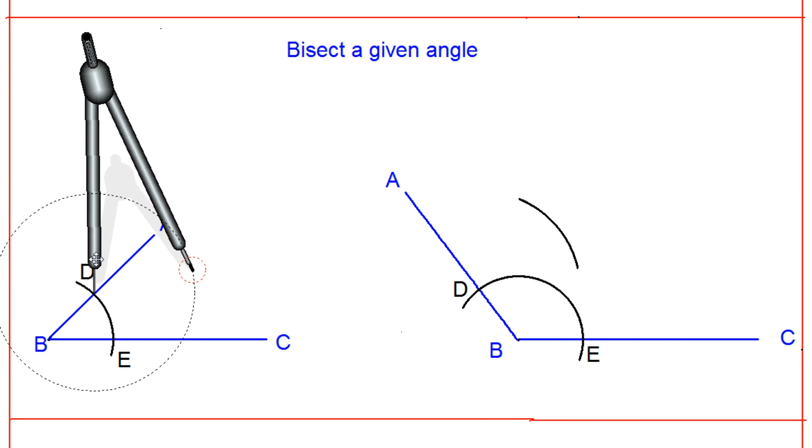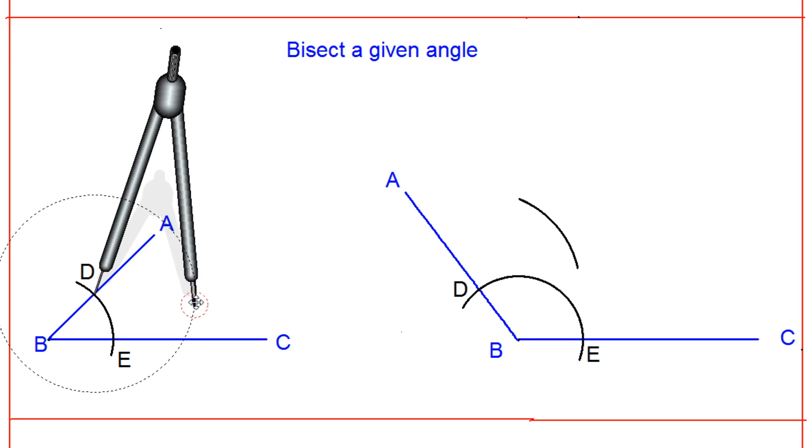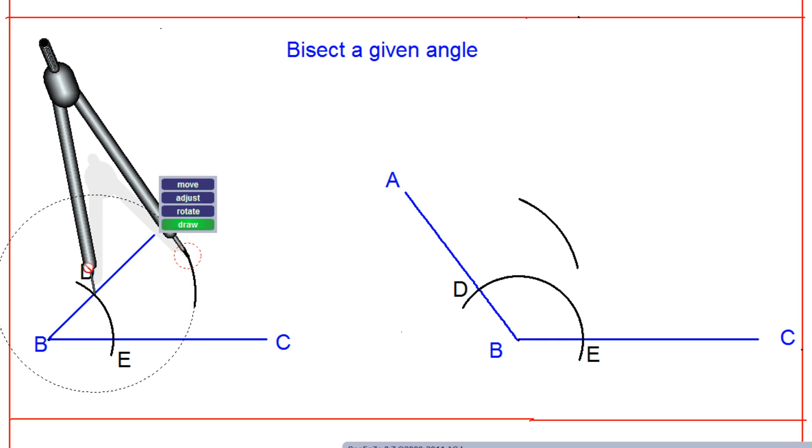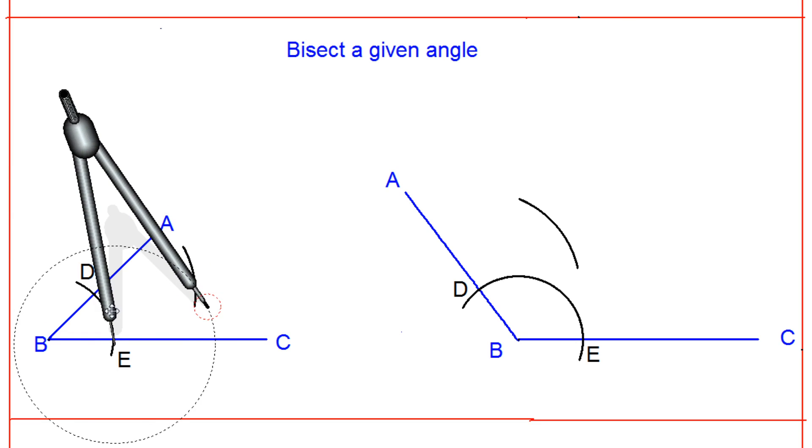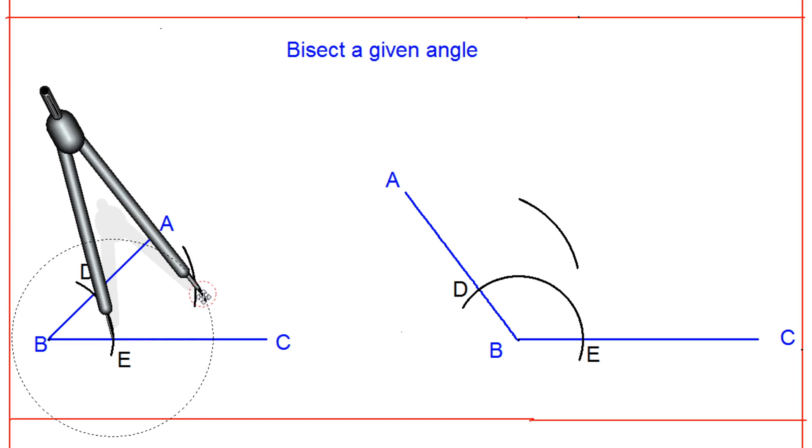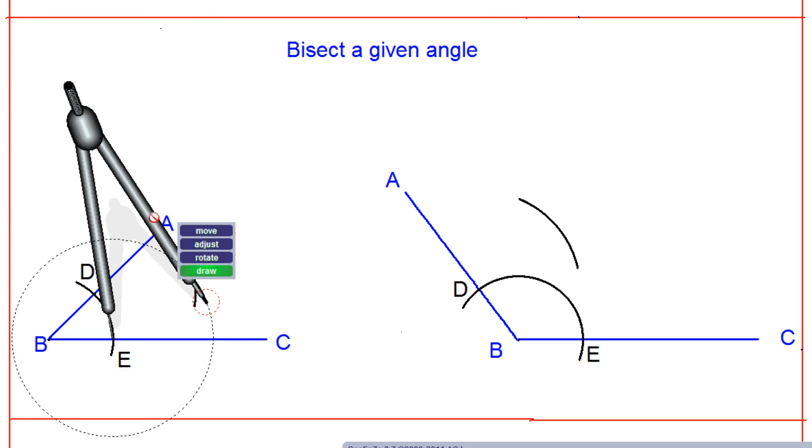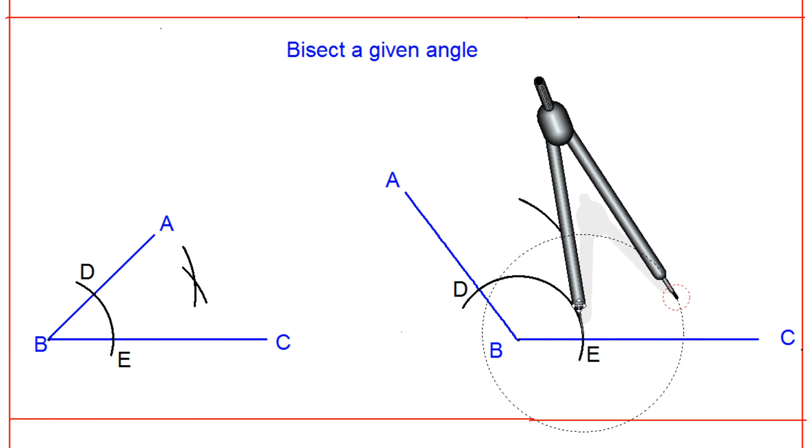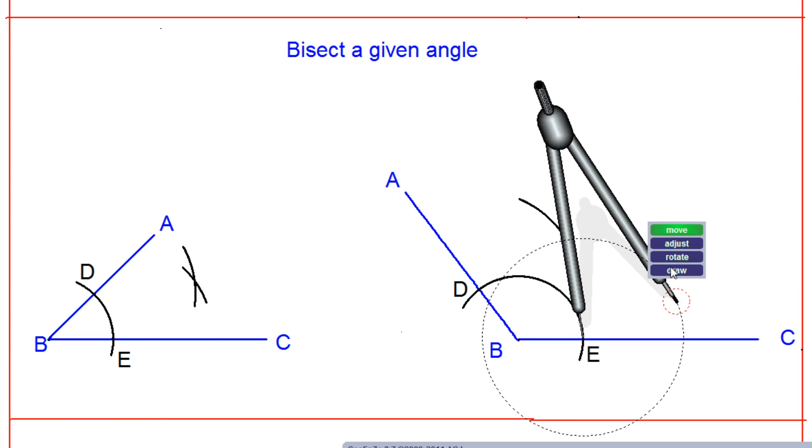Draw an arc again, making E as the center. Draw an arc for both figures, making D as the center. Now you rotate it and bring it to point E. Now I am putting it at point D and again you draw.